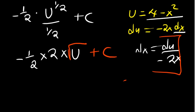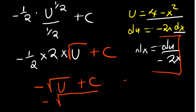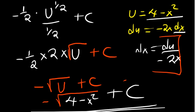Simplifying: negative 1 over 2 plus 1 equals 1 over 2, so we have u to the power 1 over 2 divided by 1 over 2. Dividing by 1 over 2 is the same as multiplying by 2. So negative 1 over 2 multiplied by 2 gives us negative 1, leaving us with negative the square root of u plus c. Since our u was 4 minus x squared, the final answer is negative the square root of 4 minus x squared plus c.